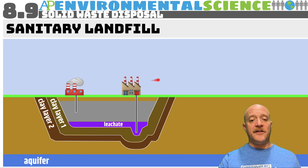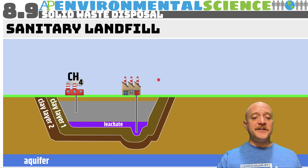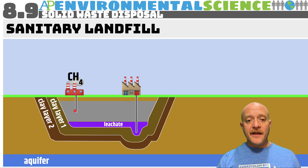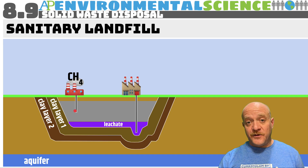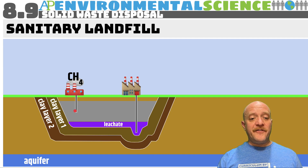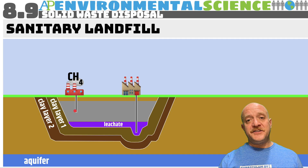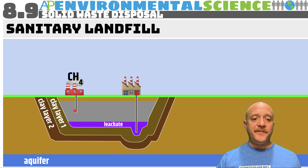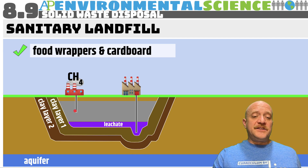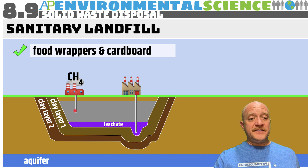We do not want leachate getting into our aquifers. The clay lining means it would take hundreds of years for leachate to pass through. Leachate is also pumped up, collected, and then disposed of on land or treated further. Landfills also generate methane because anaerobic respiration — decomposition in the absence of oxygen — releases methane as a byproduct. That methane can be collected and used as a fuel source.